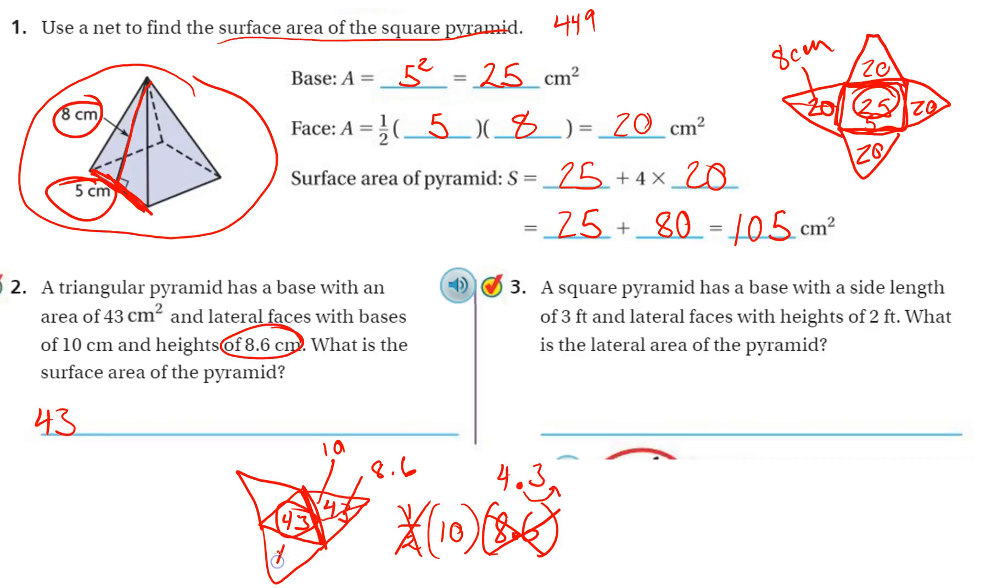So again, all of these are going to be the same, 43 all the way around. So since there's four 43s, I could write 43 four times, or I can just multiply by 4 to get my total surface area. 4 times 3 is 12. 4 times 4 is 16, plus 1 is 17. So 172, and it's centimeters squared.